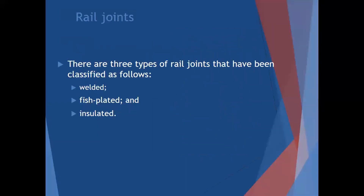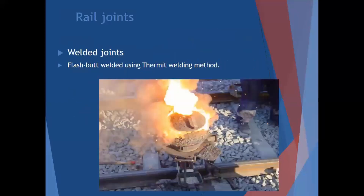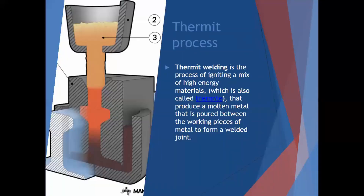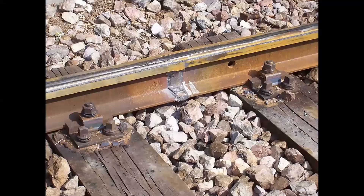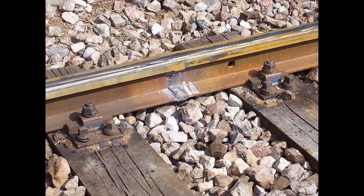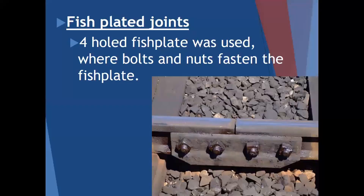There are three types of rail joints: welded, fish plated, and insulated. For welded joints, you get a flash butt weld using a thermit welding method. Basically it's a heated metal mixture - you pour it between two rails you want to join into a cast, that joins the two together, you remove the cast, and everything's good. You get a very smooth finish and it looks like one rail. The thermit welded joint is one we see a lot in South Africa.